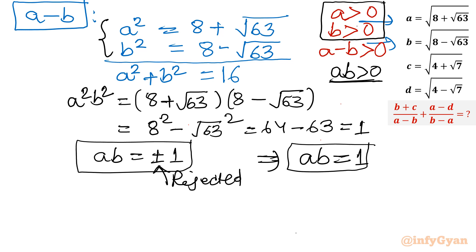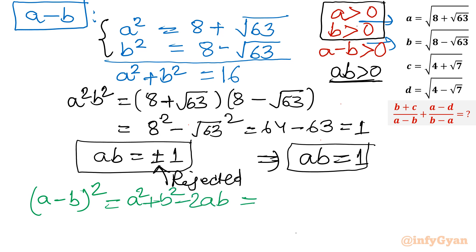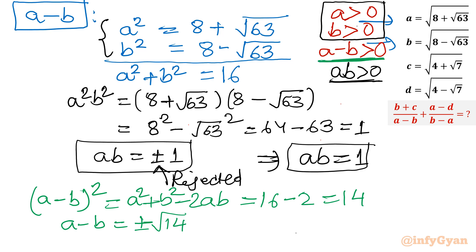With a² + b² = 16 and ab = 1, let us apply the (a−b)² formula. We get (a−b)² = a² + b² − 2ab = 16 − 2 = 14. So a−b = ±√14. But since a is greater than b, a−b is positive, so we reject the negative sign. Conclusion: a−b = √14.